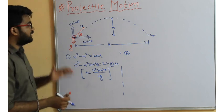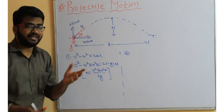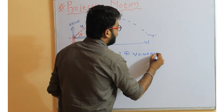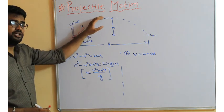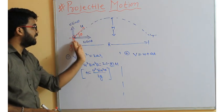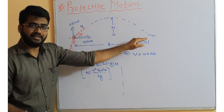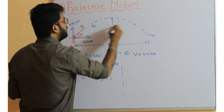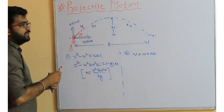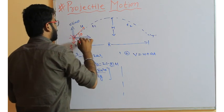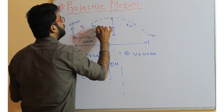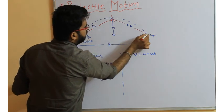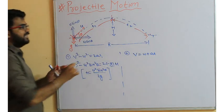Now for time of flight, we use the formula v = u + at. The final velocity at maximum height is zero. The time required from the starting point to the maximum height is t₁ (time of ascent), and from maximum height back to the ground is t₂ (time of descent). We can say t₁ equals t₂.